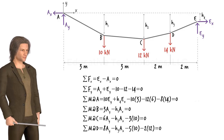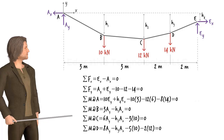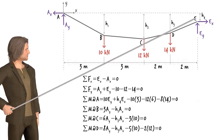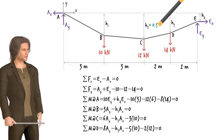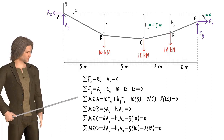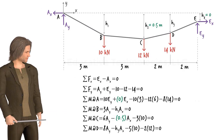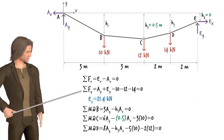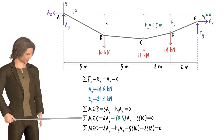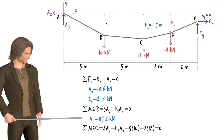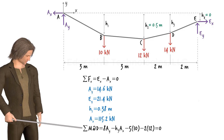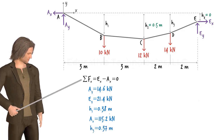In order to determine the support reactions, we need to know two of these heights. Suppose we know h2 and h4 — say h2 equals 0.5 meters and h4 equals zero. Substituting these values into the equations, they simplify so that we can determine EY, then AY, then AX. Knowing AX, we can calculate h1, then h3 can be obtained, and finally EX.